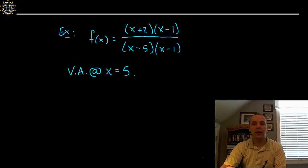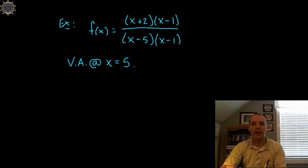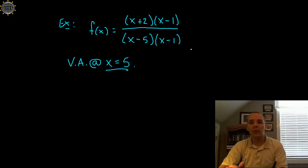But on the other hand if you had a function like this, x plus 2 times x minus 1 over x minus 5 times x minus 1, you would have a vertical asymptote at 5 right because it would give you division by 0 but you would not have one at 1. How come? Well you see these factors here would cancel.